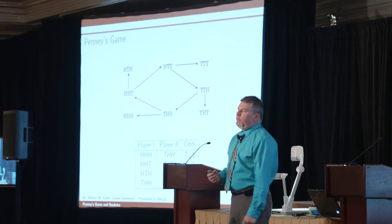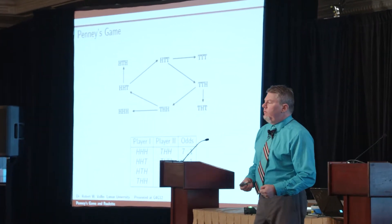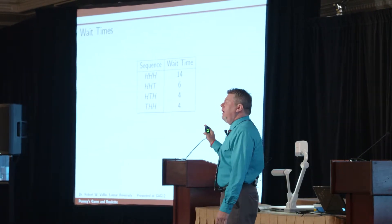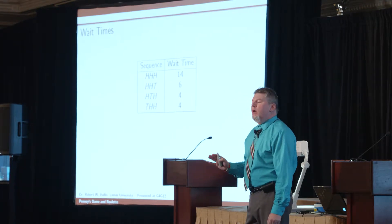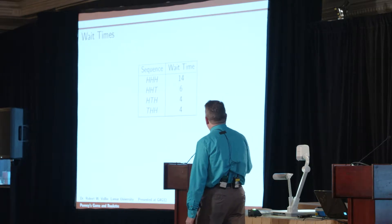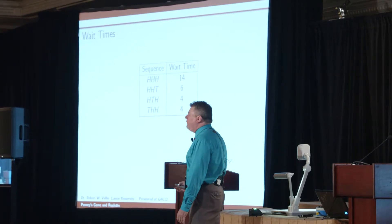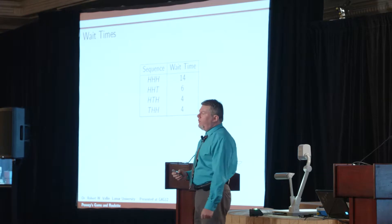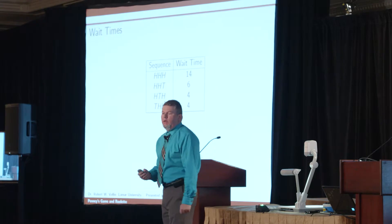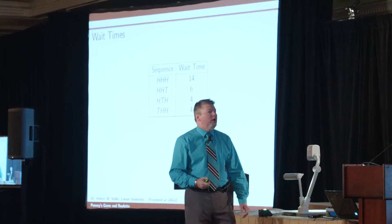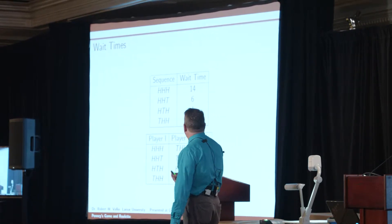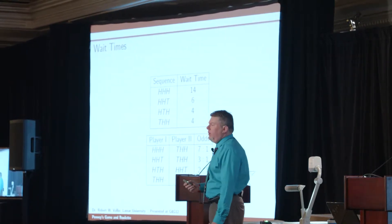The first question with Penny's Game is: what are the odds in everybody's favor? The second question is: if you pick a sequence and just start flipping a coin, how long should you wait on average for your sequence to appear? The number of flips until three heads appears should average about 14. For heads, heads, tails it's 16. The wait time is exactly twice the odds.